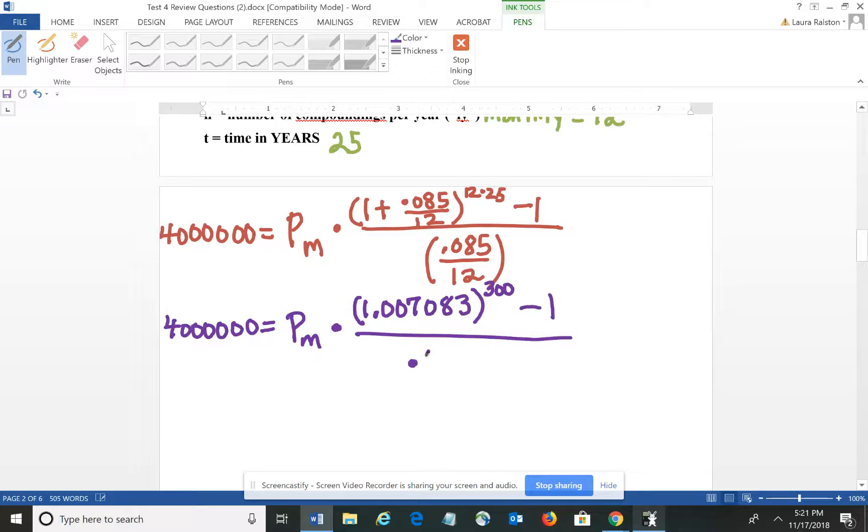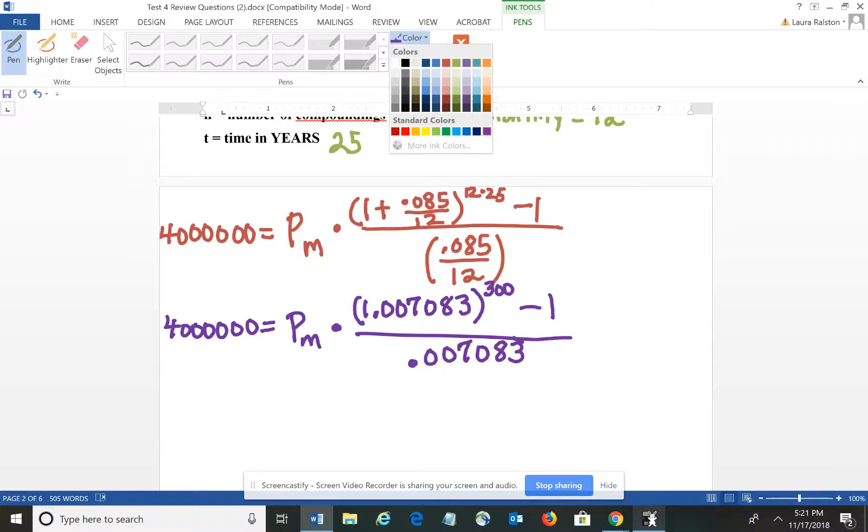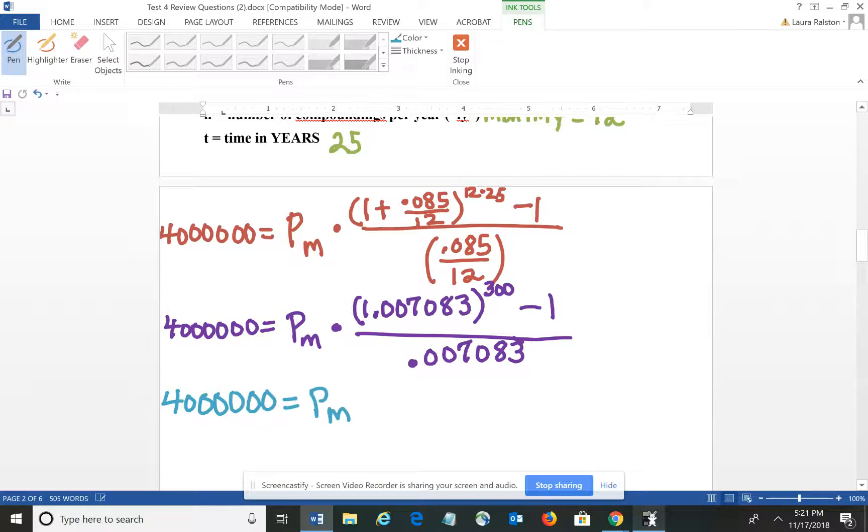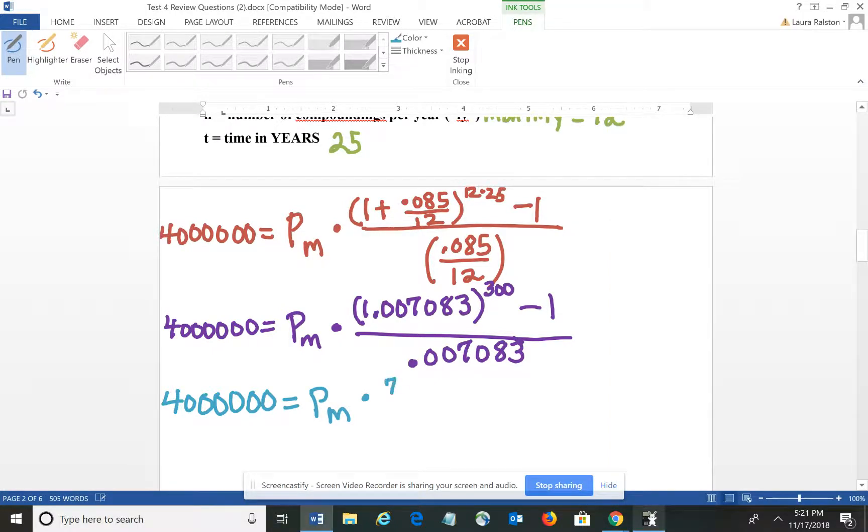So at this point we have 1.007083 raised to the 12 times 25 – that's 300 – minus 1 over .007083 repeating. So I've taken the number from my calculator screen, 1.007083. I need to raise that to the 300th power, get the answer and subtract 1.